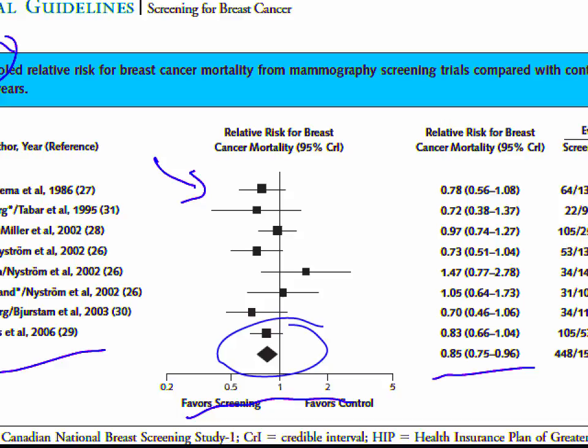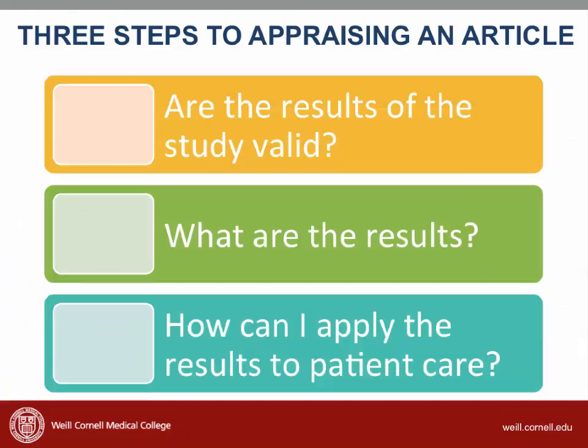So those are the essential ways that we interpret systematic reviews. Now you know the essentials of interpreting the results of a systematic review or meta-analysis. In class, we'll review these steps and we'll discuss how to apply the results to your own patients.